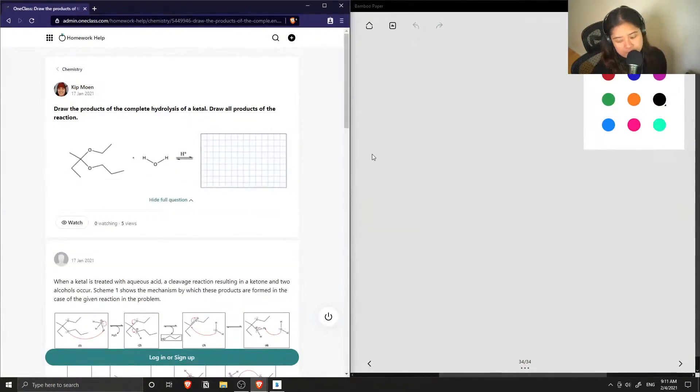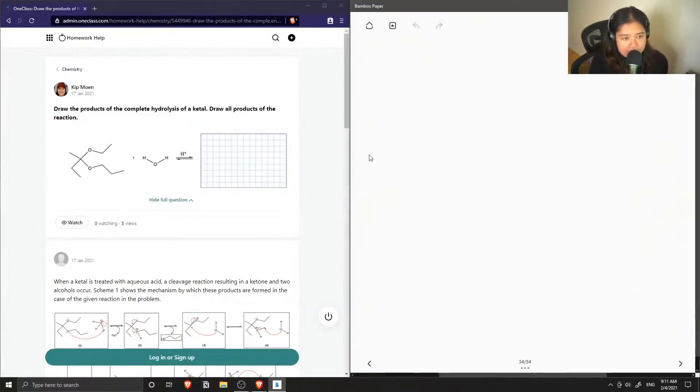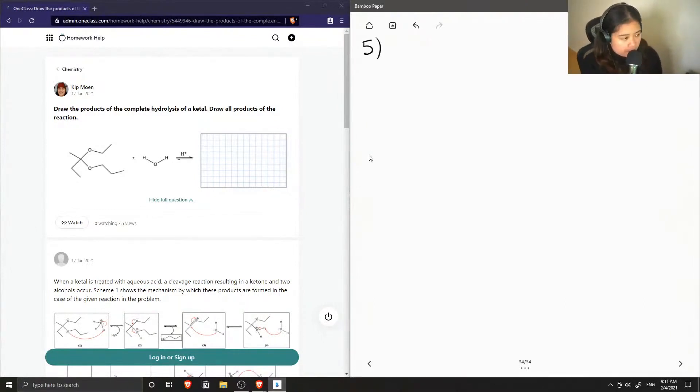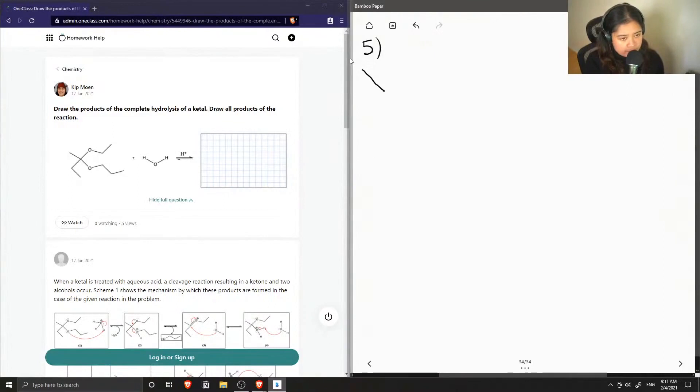Okay, so question number five is to draw the products of the complete hydrolysis of a ketal. Draw all the products of the reaction. Okay, so we start off with the ketal.